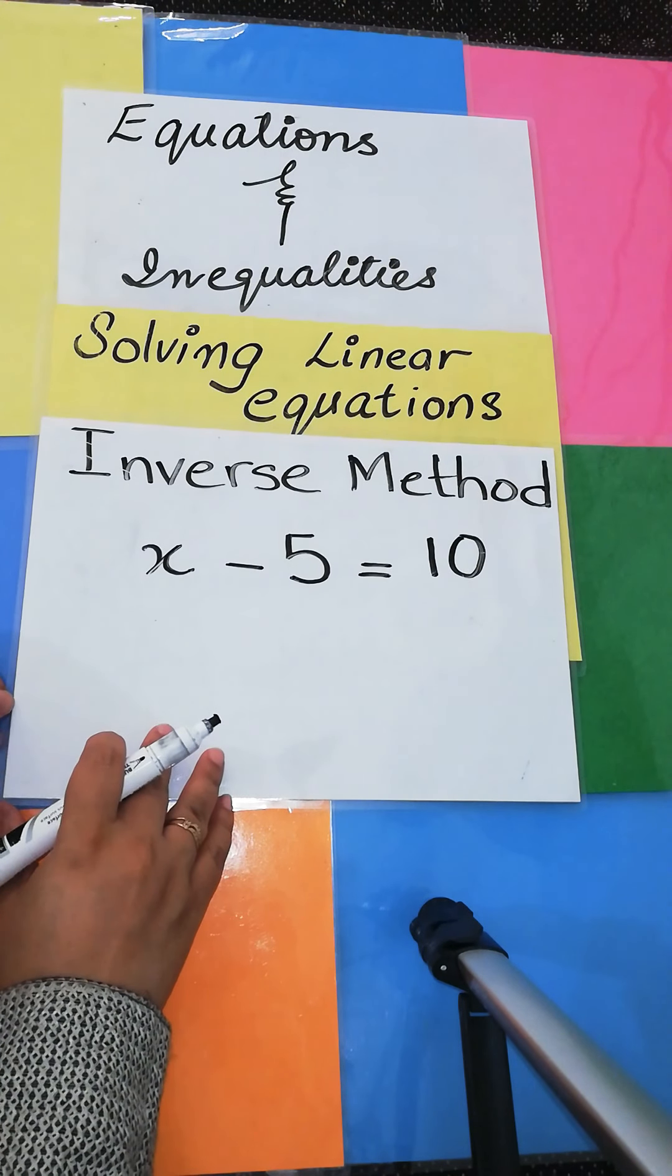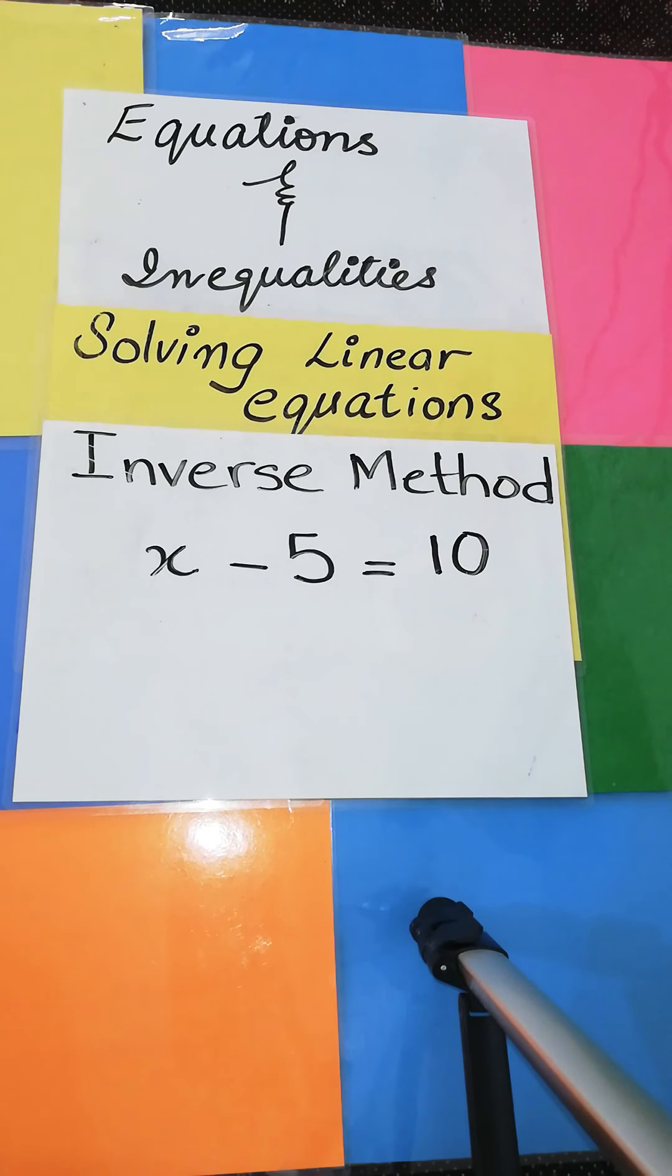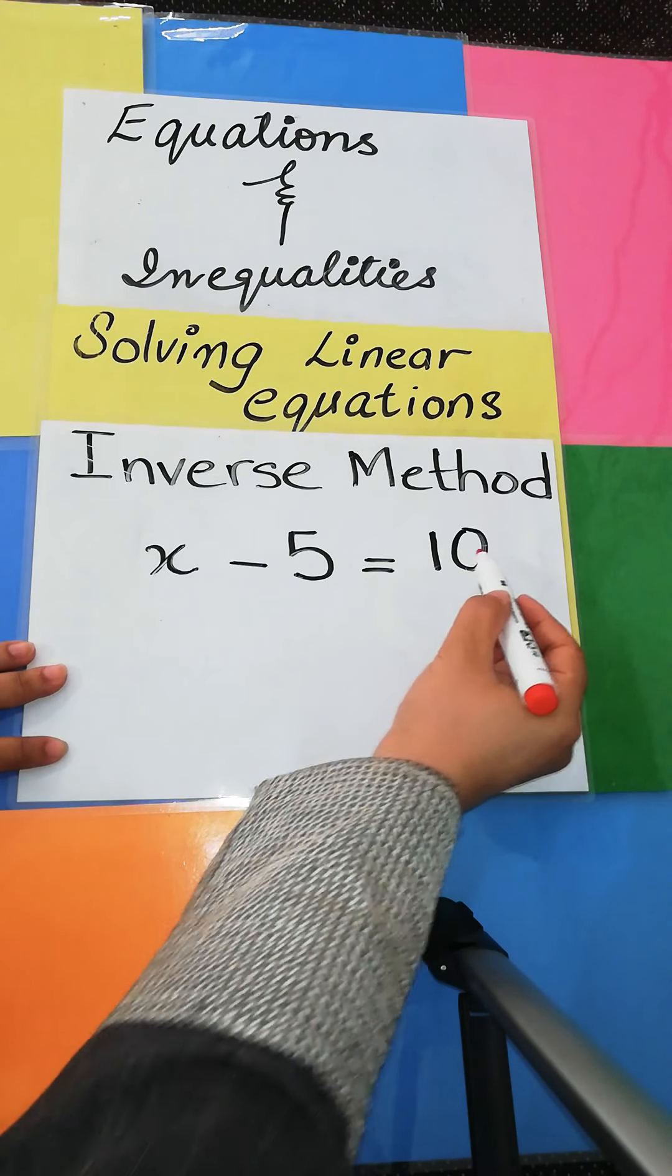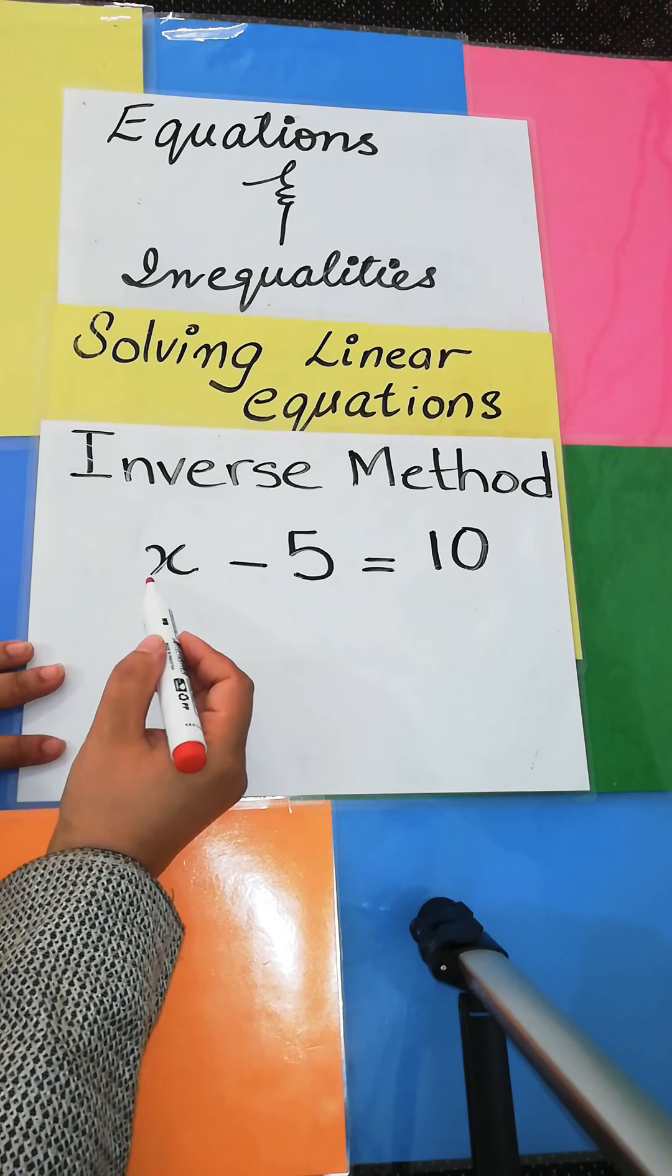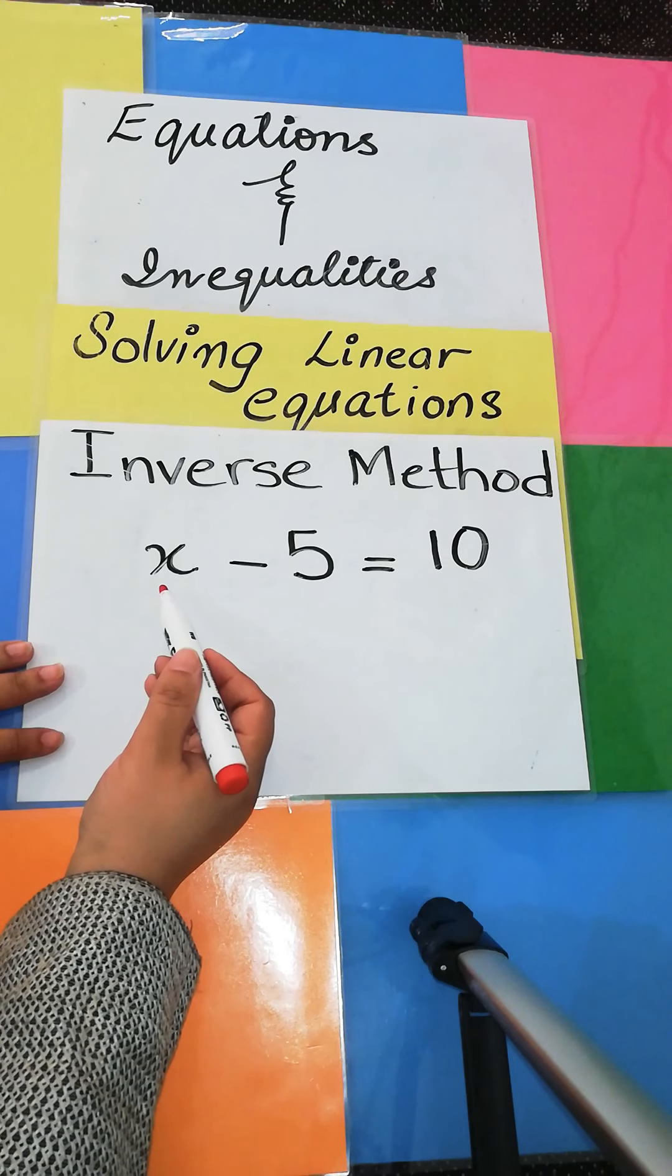The inverse method. Now in the inverse method, you have to solve the equations using the arrow in the reverse way. Like if it is x minus 5 equals 10, x is the unknown variable and we have to find the value of x.